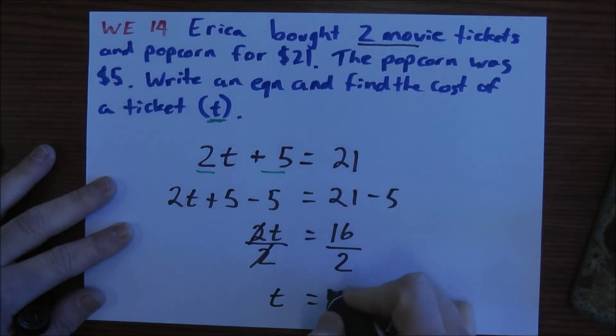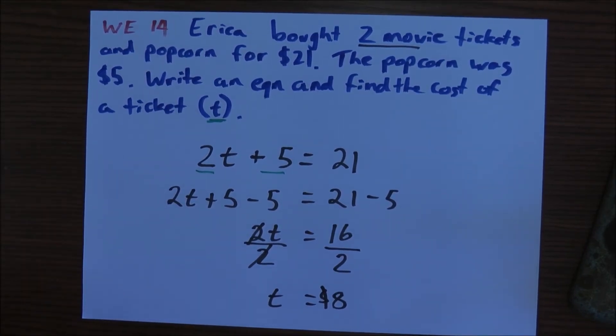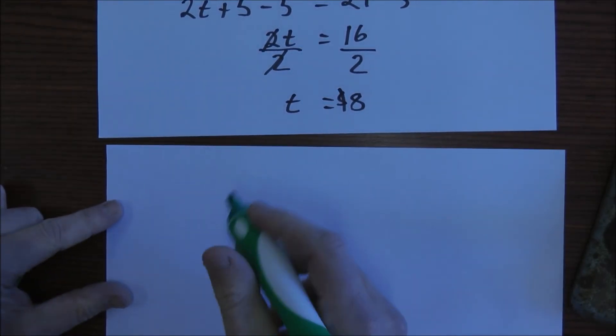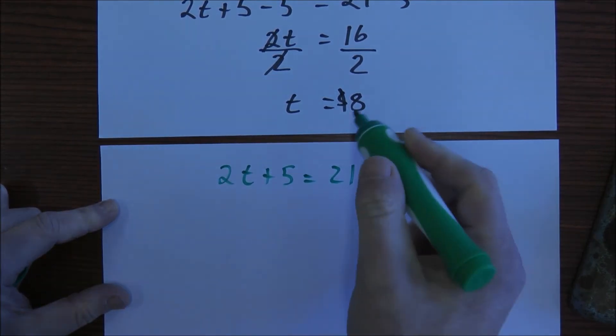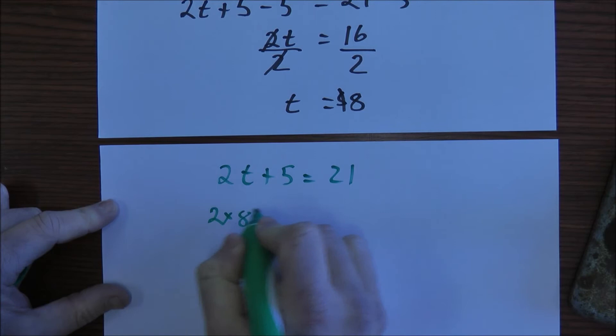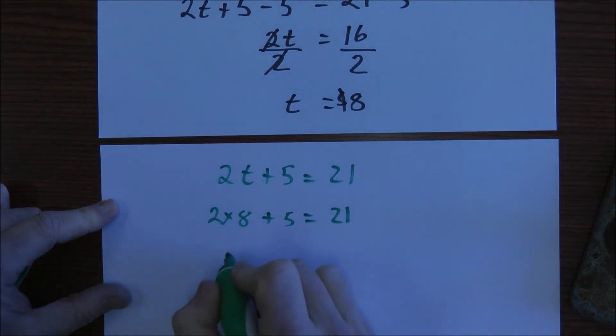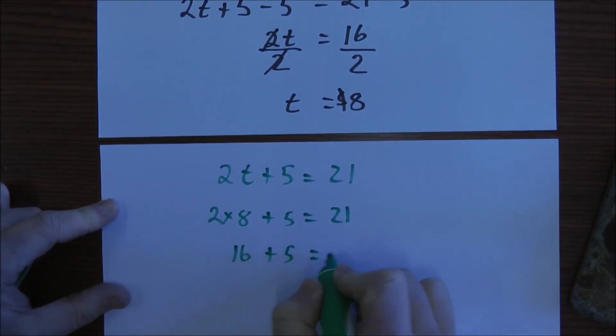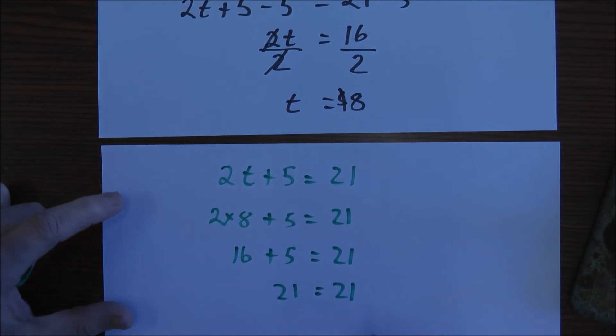Now that's not my final answer because I've been dealing in dollars. T is $8. Once again, if I want to, I can go back and check this result. My original equation was 2T plus 5 equals 21. I know that T is 8. 2 times 8 plus 5 equals 21. 2 times 8 is 16 plus 5 equals 21. Add 16 and 5 together. And you can see it equals each other. So therefore, I know that I'm right.